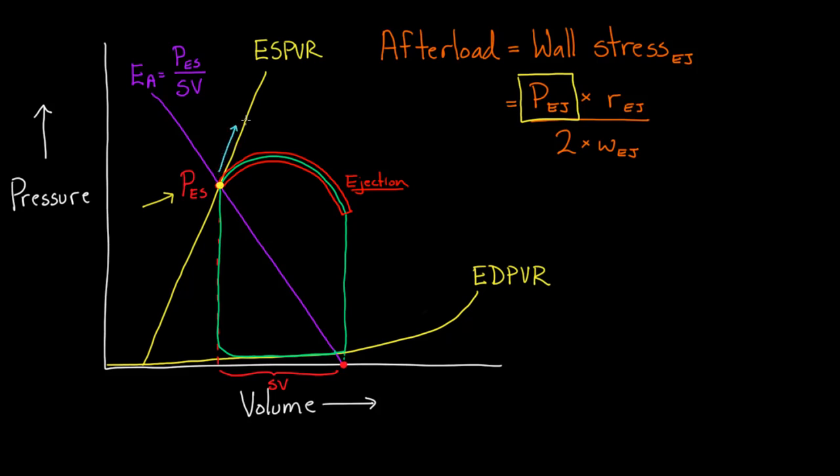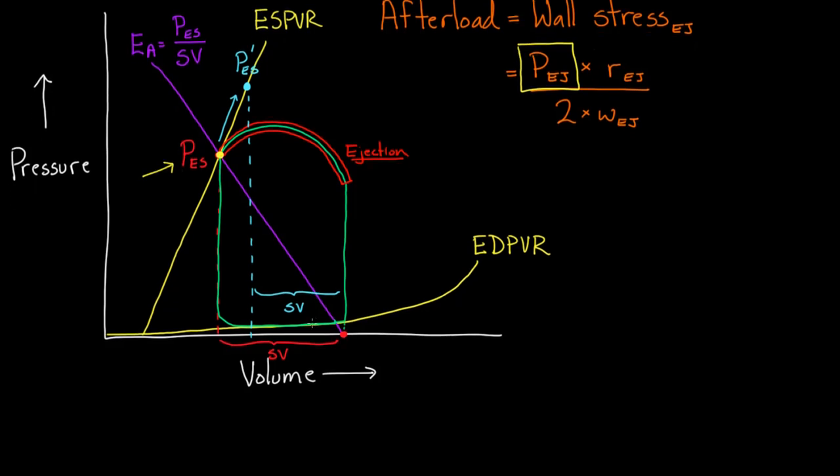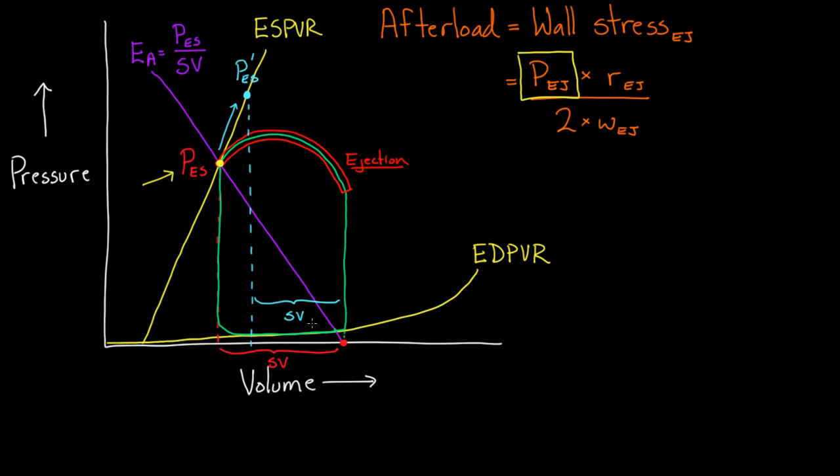On the graph, it looks like this, where your value is higher. This is the new pressure at end-systole, P prime. If that's the new pressure, what else would change? First, this drops down this line. If pressure has gone up, stroke volume has gone down. The stroke volume will be smaller. Let me jot down the formula so you can see everything.